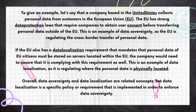In the case of data localization, if the EU also has a data localization requirement that mandates personal data of EU citizens must be stored on servers located within the EU, then the company in the US would need to ensure it is complying with this requirement as well. This is an example of data localization, as it regulates where the personal data is physically located. Overall, data sovereignty and data localization are related concepts, but data localization is a specific policy implemented to enforce data sovereignty.